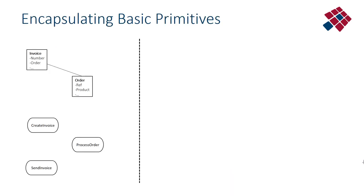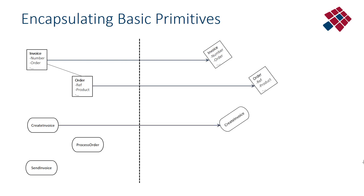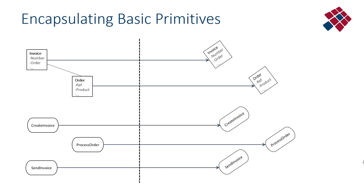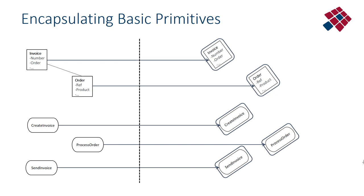We have also seen in these design principles that it is important that if we use simple data structures or data classes to represent data entities, or simple processing functions or classes with processing methods to represent tasks or processing actions, we have to encapsulate them. We have to make sure that these classes, structures, and processing functions are encapsulated properly, and if we change them or make new versions, the interface doesn't change and these changes do not ripple through in a positive feedback mechanism.